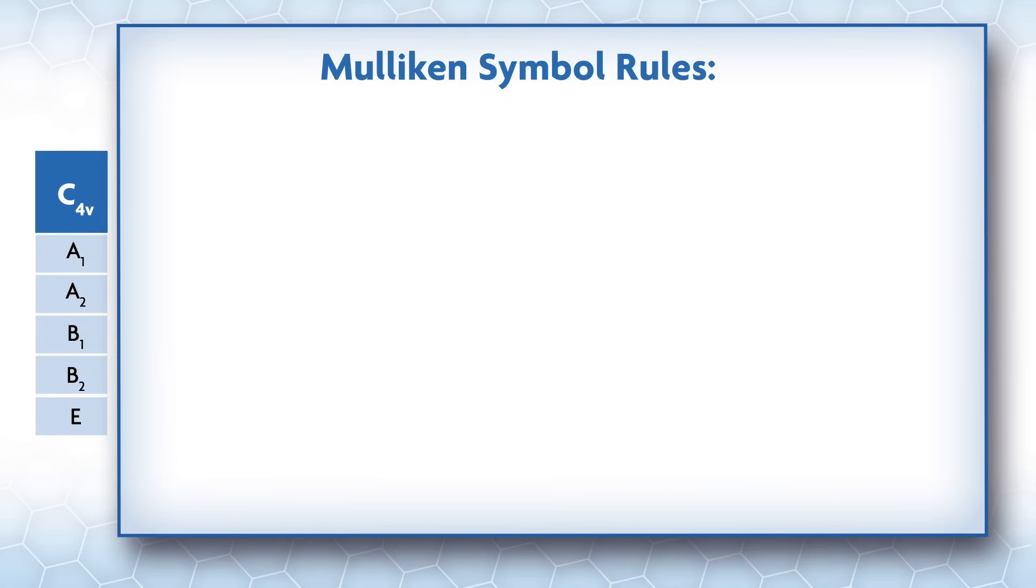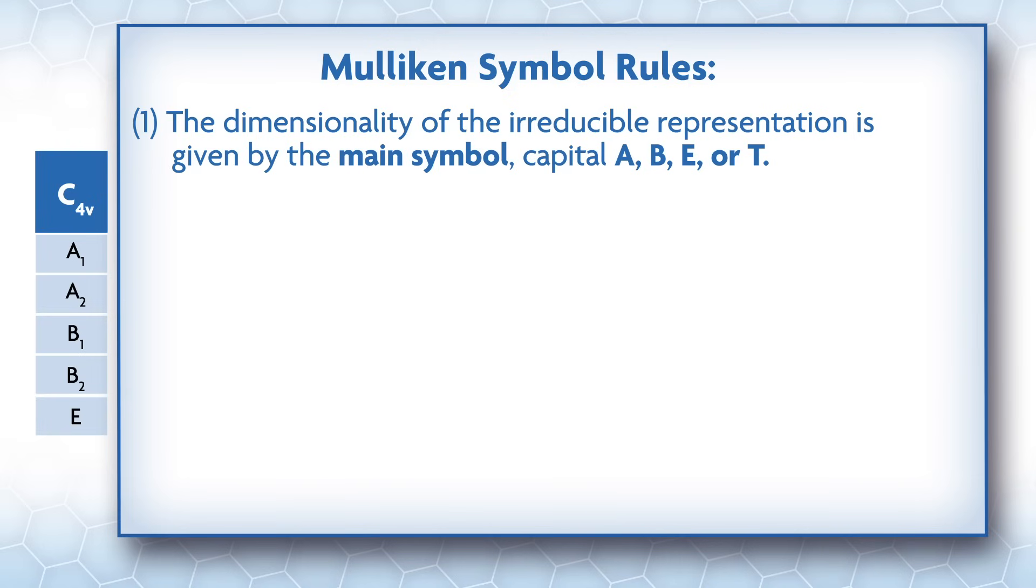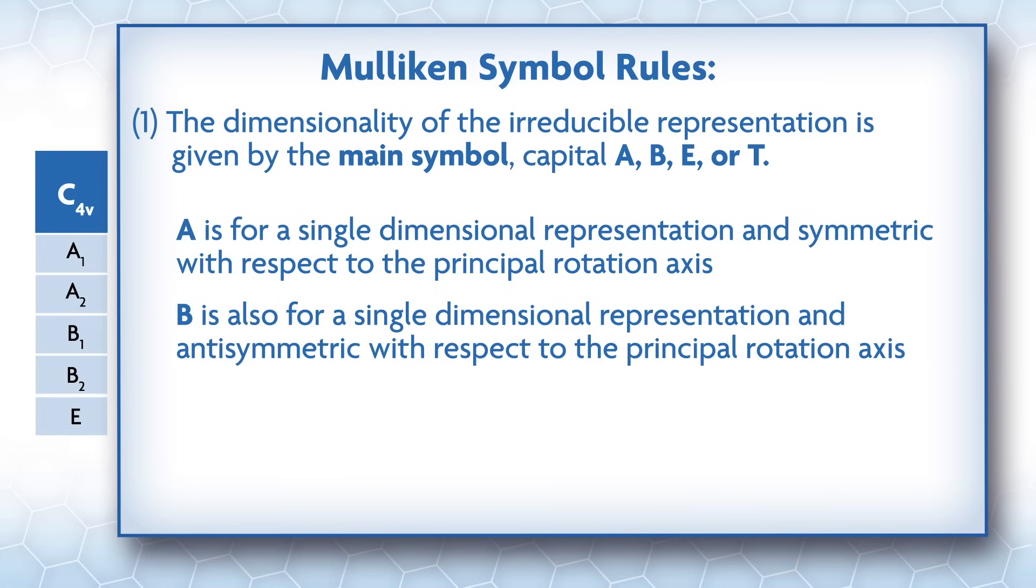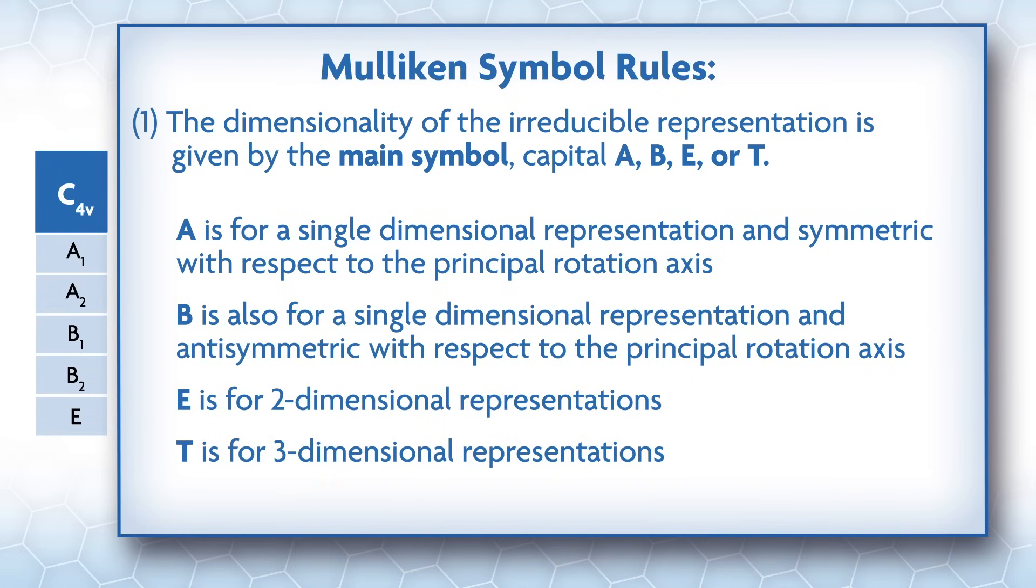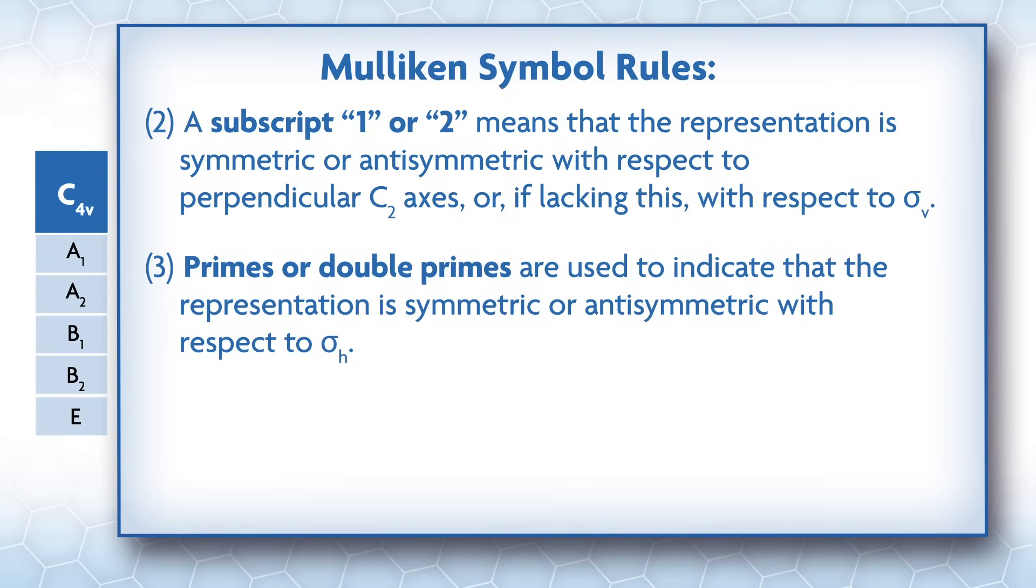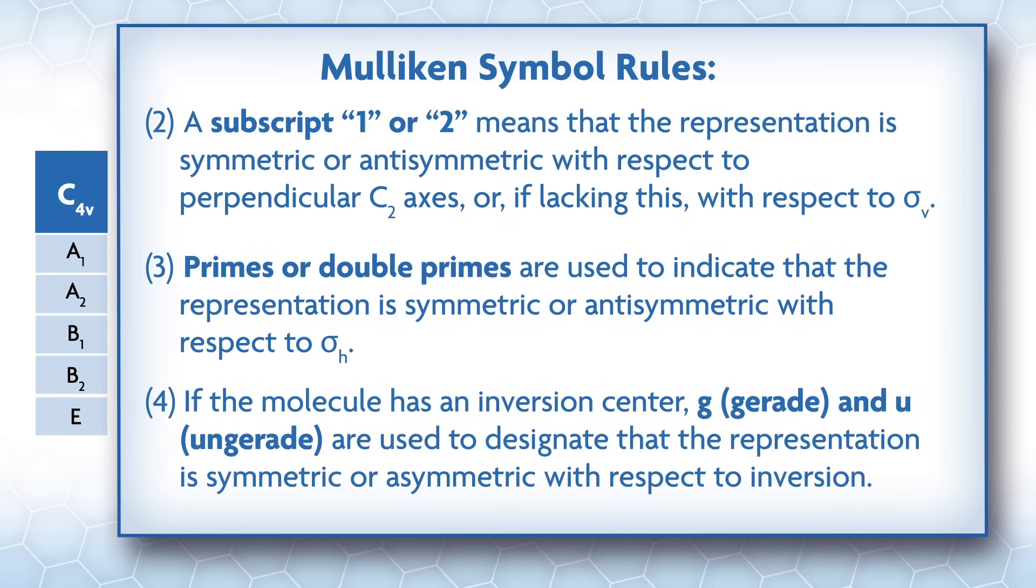Mulliken symbols are assigned using a few rules. The dimensionality of the irreducible representation is given by the main symbol capital A, B, E, or T. A is for a single-dimensional representation and symmetric with respect to the principal rotation axis. B is also for a single-dimensional representation and anti-symmetric with respect to the principal rotation axis. E is for two-dimensional representations and T is for three-dimensional representations. A subscript 1 or 2 means that the representation is symmetric or anti-symmetric with respect to perpendicular C2 axes, or if lacking this, with respect to sigma v. Primes or double primes are used to indicate that the representation is symmetric or anti-symmetric with respect to sigma h. If the molecule has an inversion center, g (gerade) and u (ungerade) are used to designate that the representation is symmetric or anti-symmetric with respect to inversion.